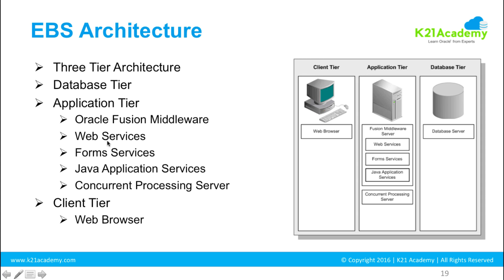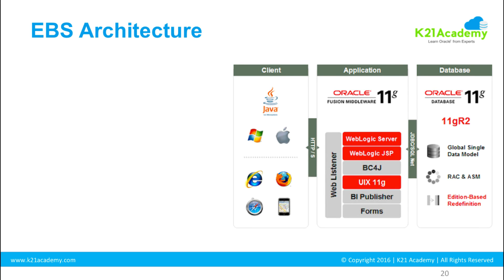We'll go deep dive into the application tier details. The application tier and database tier can be on the same machine or different machines. Within the application tier, all services can be on the same server or spread across different servers. For example, you can have a database server on one machine, Oracle web services on another, form services on another, and concurrent processing on another — or combine all on one. These are logical collections of services, and we'll cover deployment in the installation module.